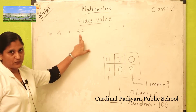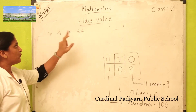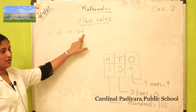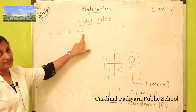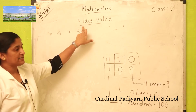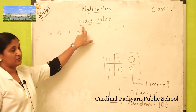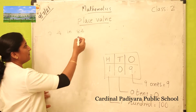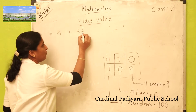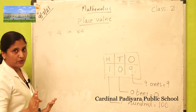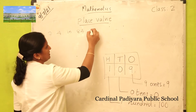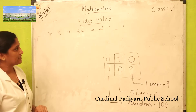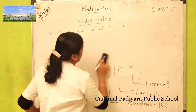Look at this number 84. What is the place value of four? Four is in ones place — the right side first place. How many ones? Four ones. Four ones is four — the number itself.